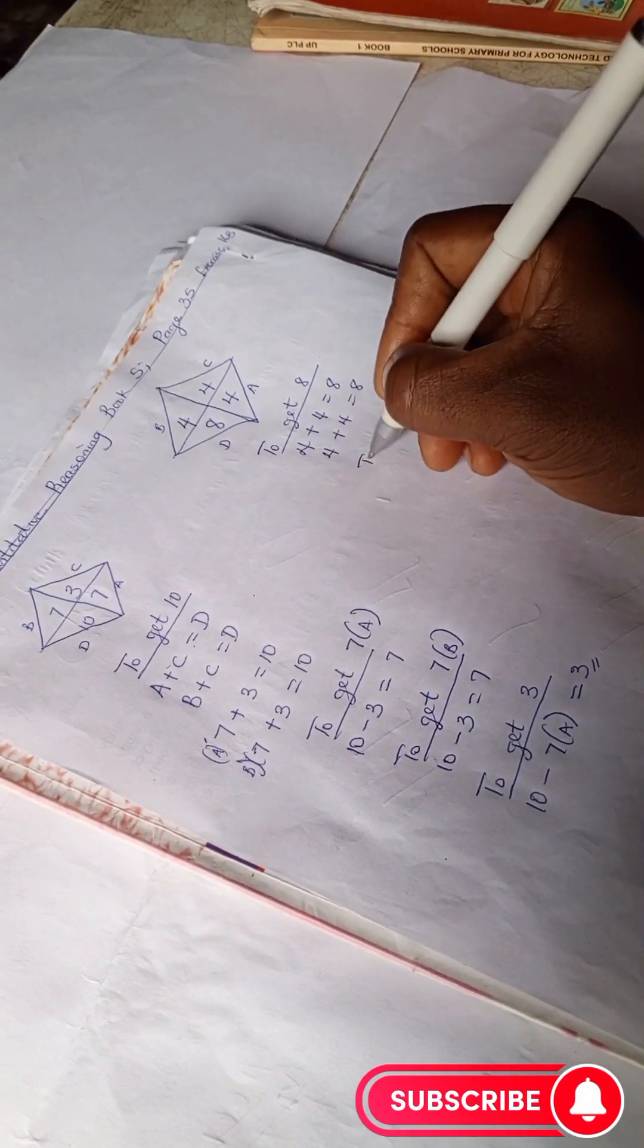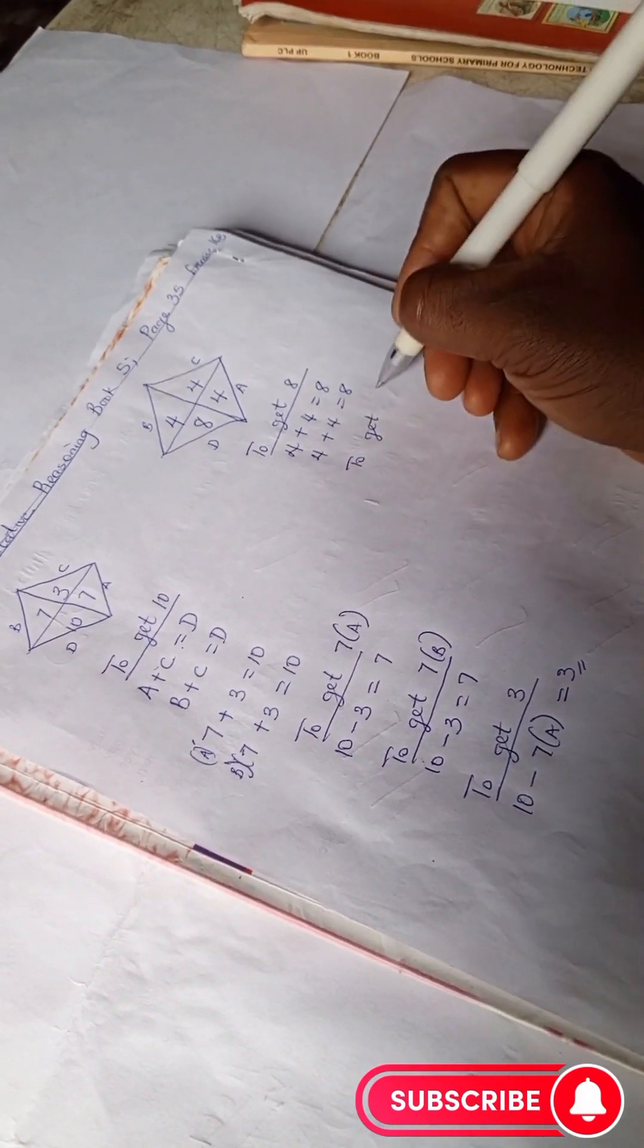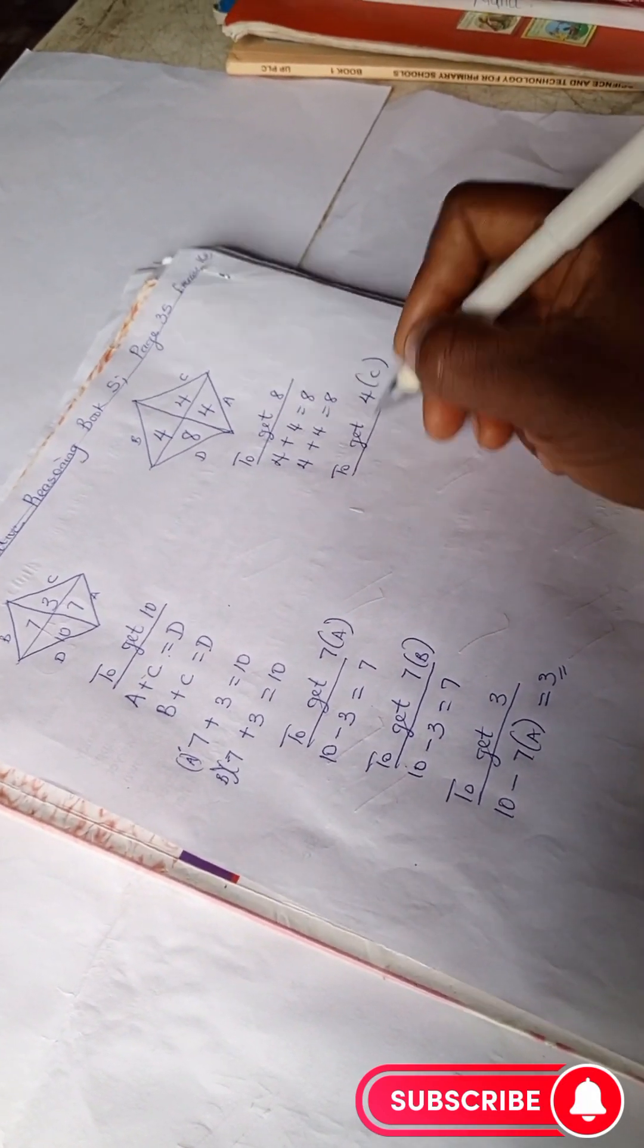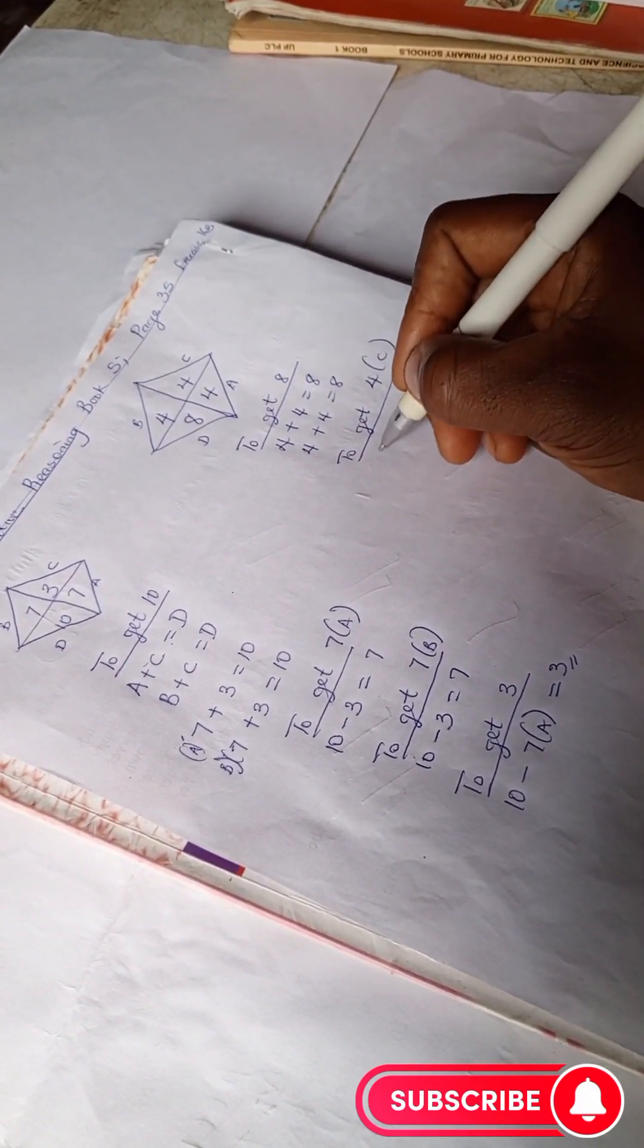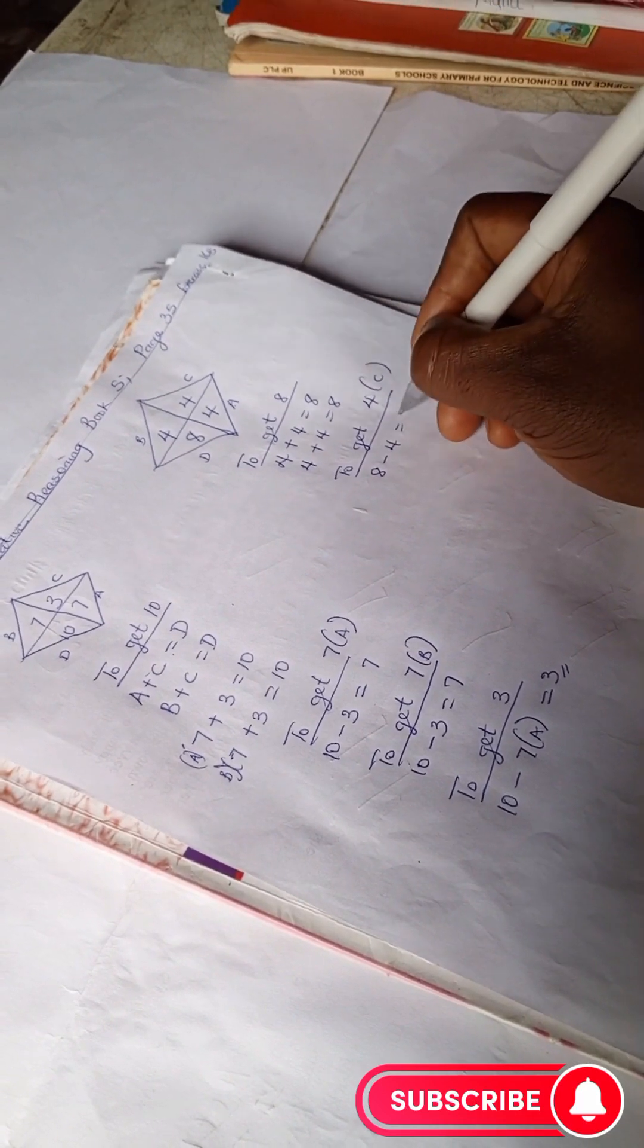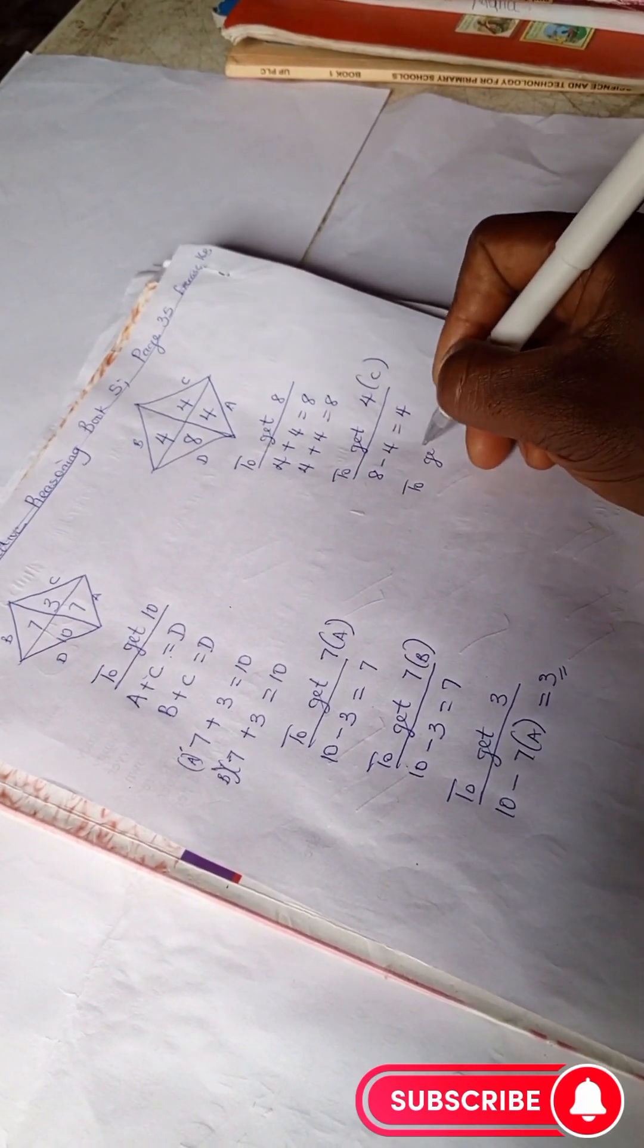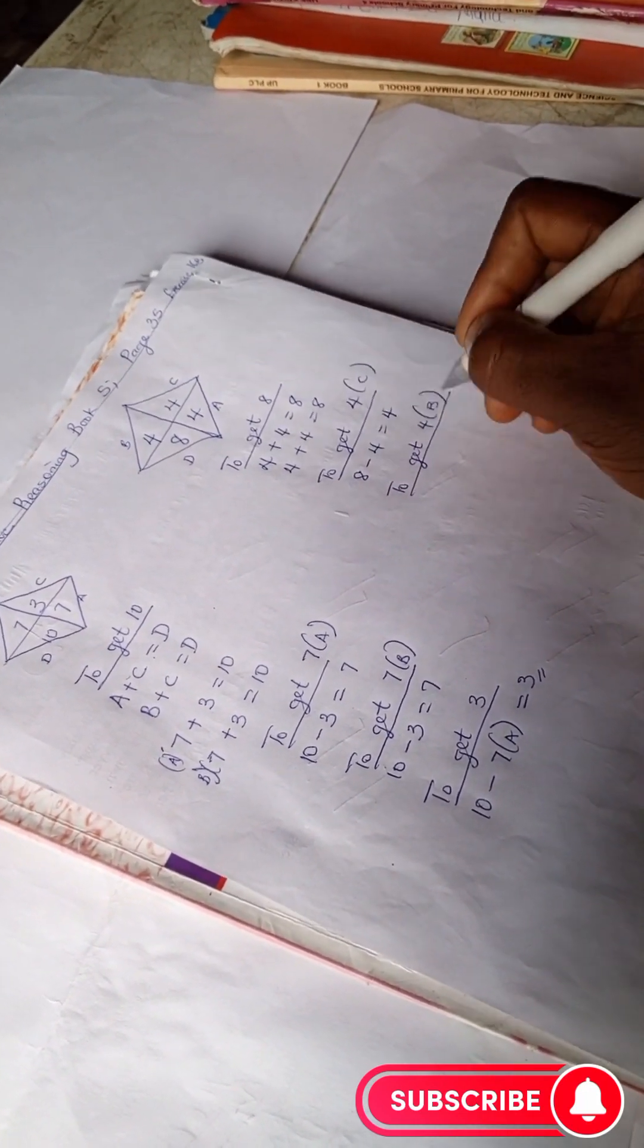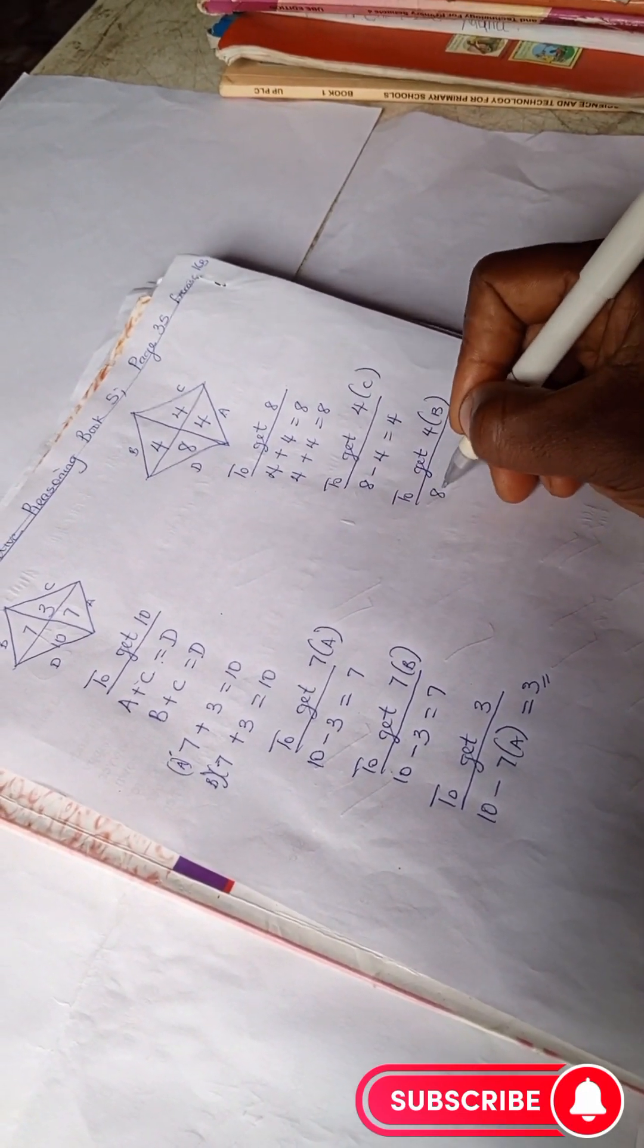So to get four for that C4, we have eight minus four, which is four. And to get the other four, which is our B4, we can also say eight minus four, which is four.